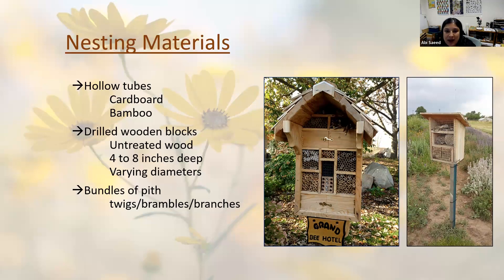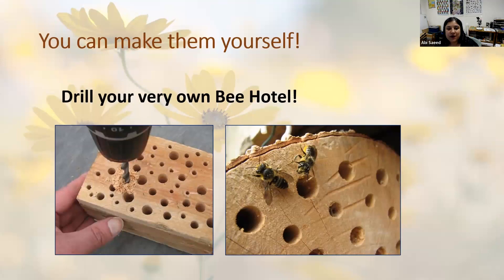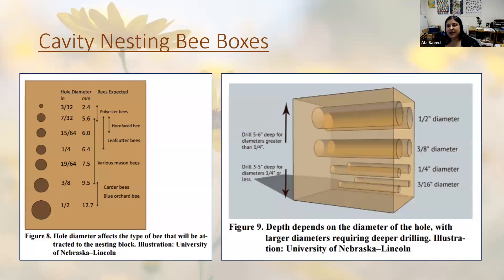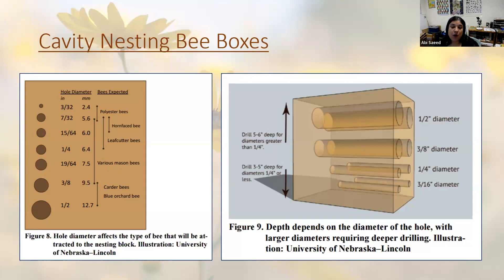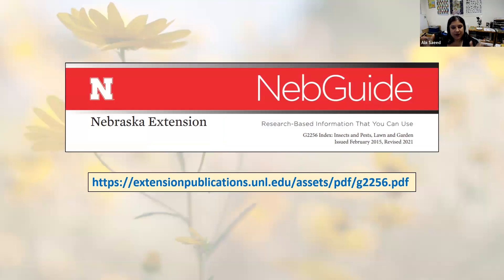The picture on the left is from the Granby Hotel at Michigan State University, and on the right from the Pollinator Garden at Montana State University — really cool examples of what bee hotels can look like. You can make these yourself. Nebraska Extension created a nice publication about how to build solitary bee hotels with great information on depth, diameters, and which bee groups will visit different sizes of holes.